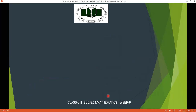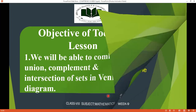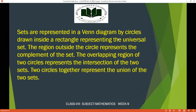The objective of today's lesson: we will be able to combine union, complement, and intersection of sets in a Venn diagram. Sets are represented in a Venn diagram by circles drawn inside a rectangle. We represent the universal set with the rectangle, and we represent the subsets with circles inside that rectangle. We overlap circles to show intersection, union, and complement.